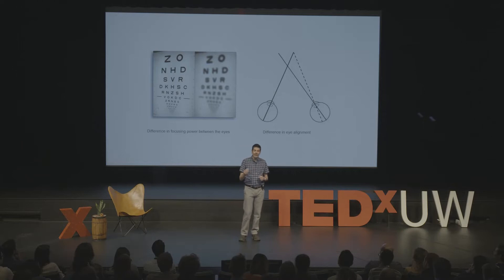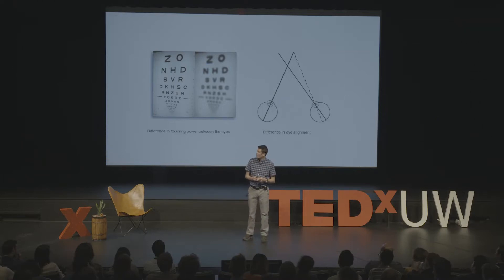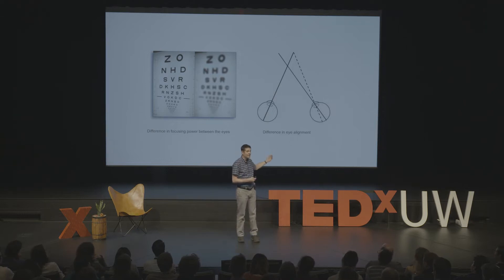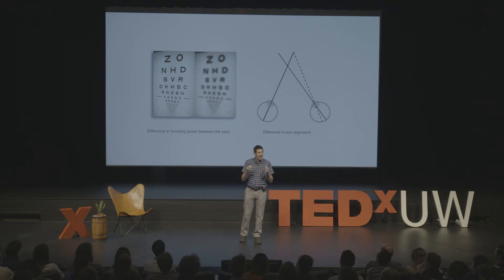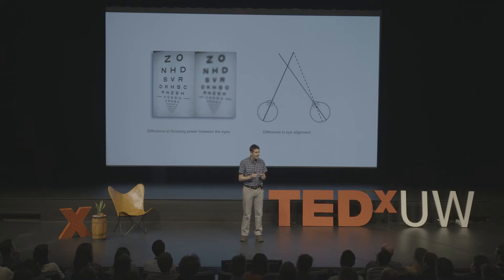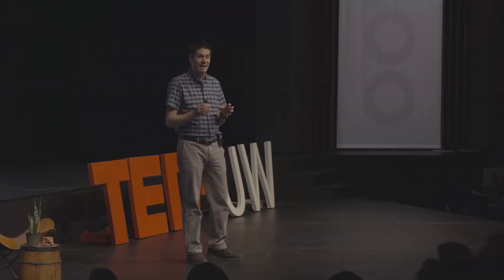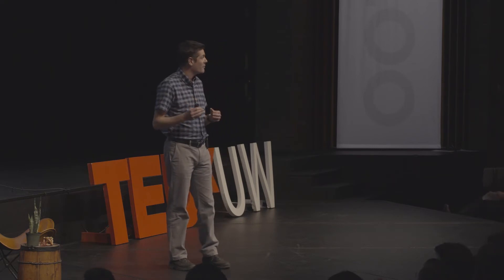Now, crucially, simply going back and correcting the problem that caused amblyopia does not immediately recover vision in the eye. For example, providing the correct pair of spectacles to give a clear image in the two eyes, or surgically aligning the eyes, does not immediately allow vision to recover. That's because the problem is no longer to do with the eye — it's to do with the way the brain has developed to process information from that eye.